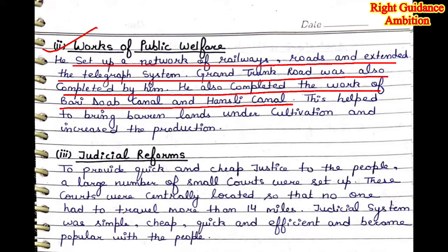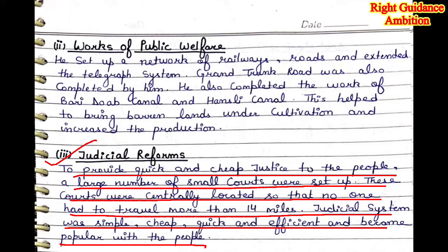Third point: Judicial Reforms. To provide quick and cheap justice, a large number of small courts were set up. These courts were centrally located so that no one had to travel more than 14 miles. The judicial system became simple, cheap, quick, and efficient, and grew popular with the people — accessible to everyone regardless of their community or economic status. These were the changes John Lawrence made in the judicial system.